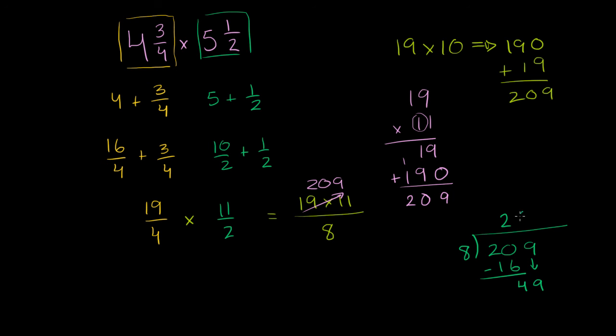8 goes into 49 6 times. 6 times 8 is 48. Subtract. We end up with a remainder of 1.